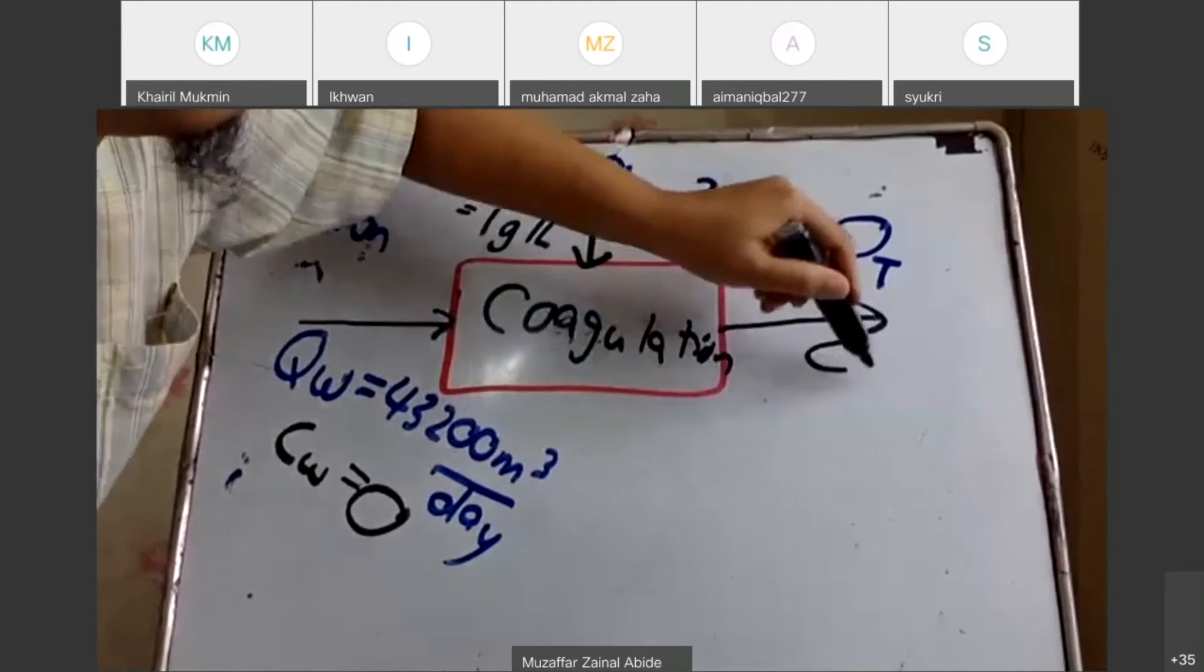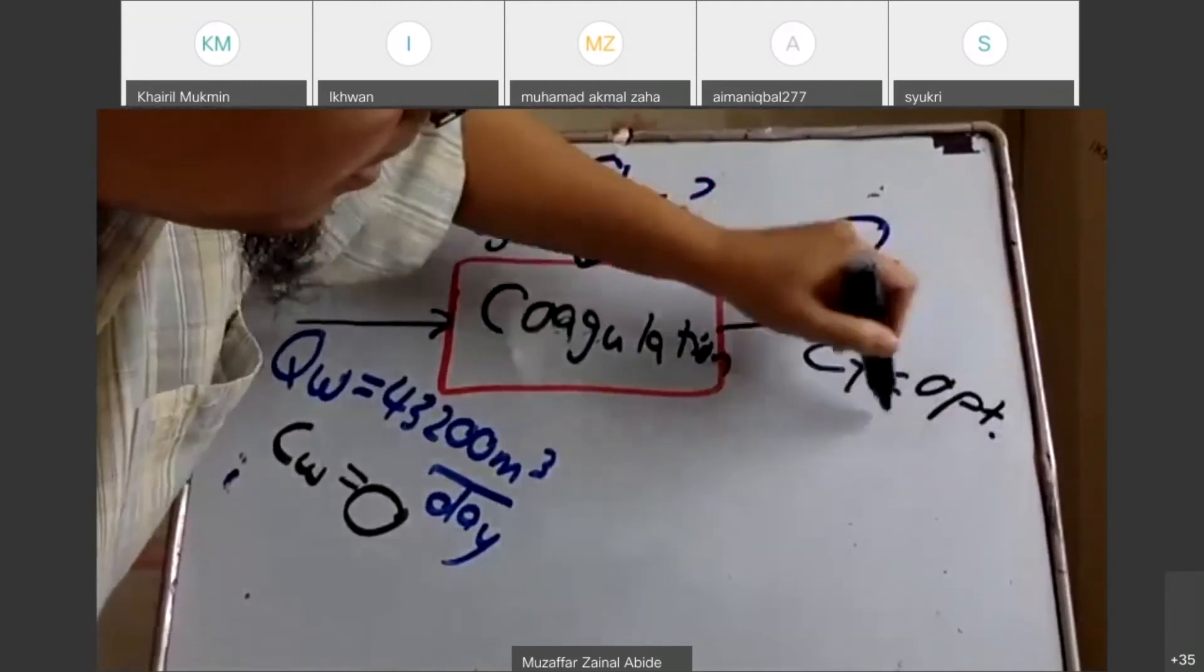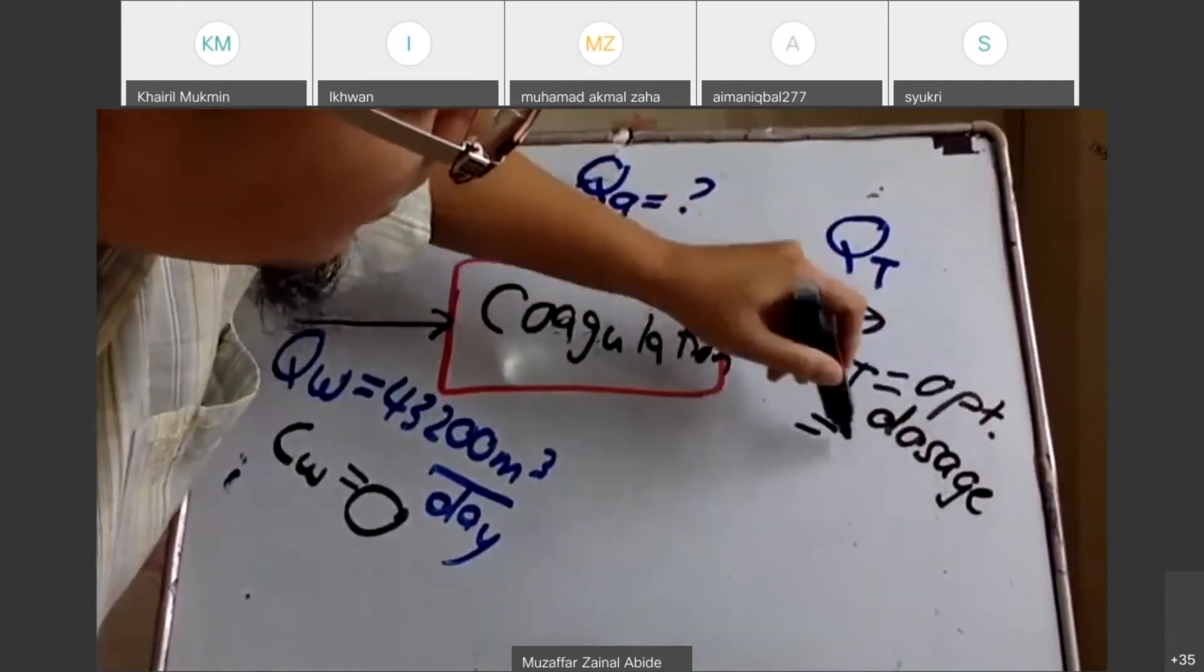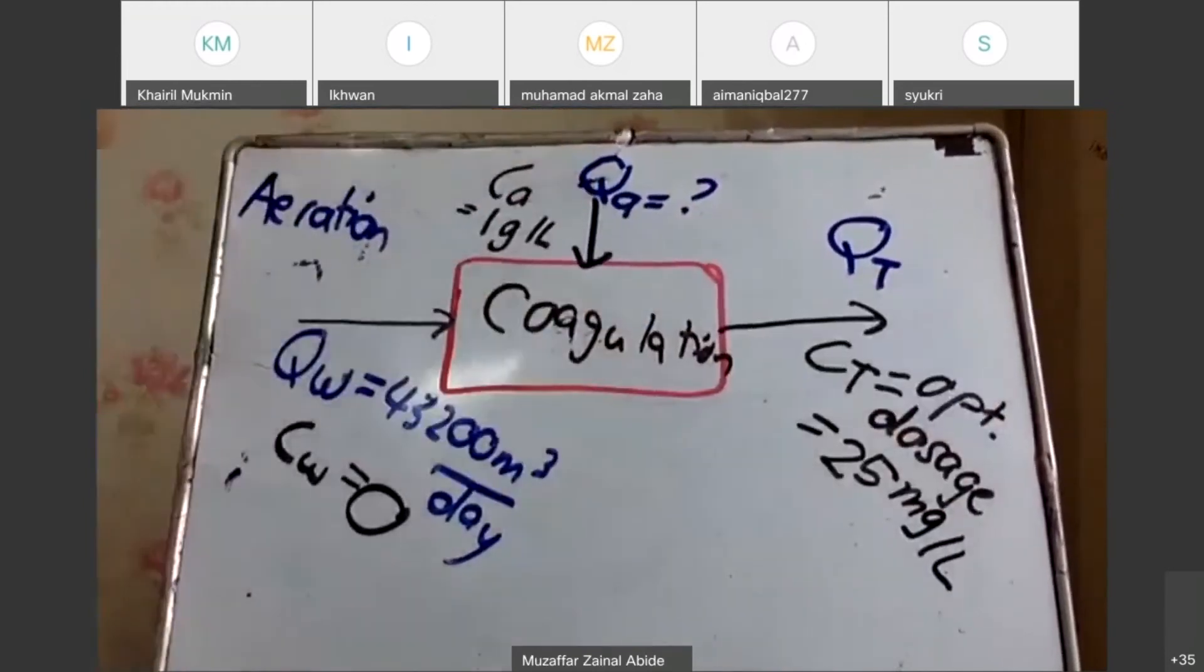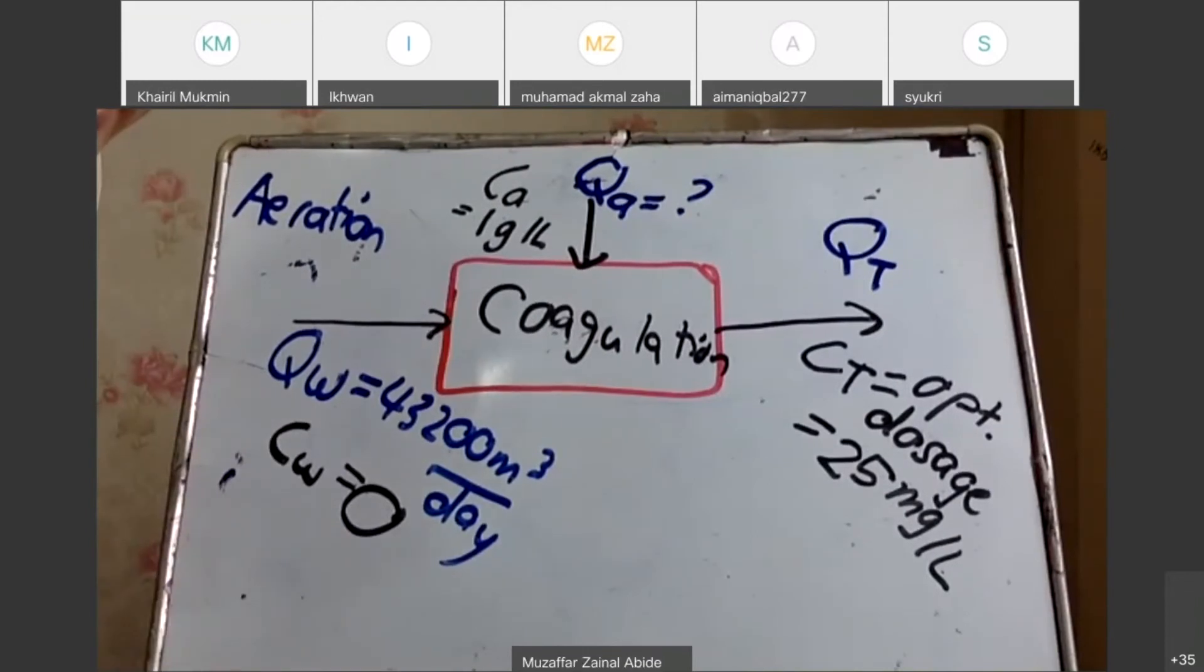So the concentration for total, this is the optimum dosage. I hope that you can see it. And that is 25 milligram per liter. Can I proceed?